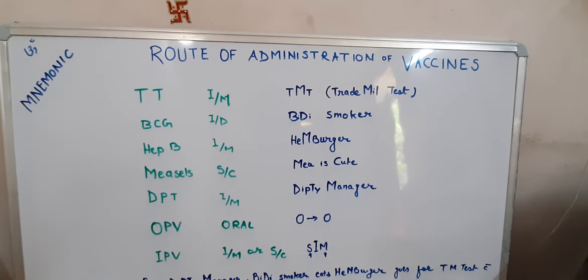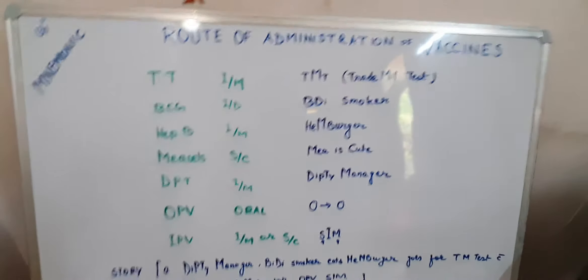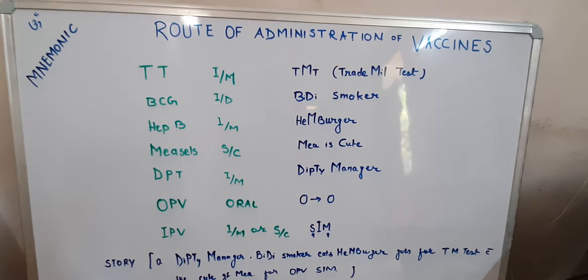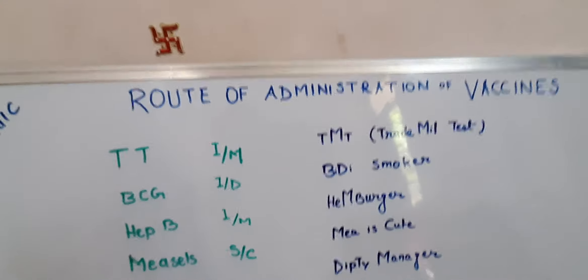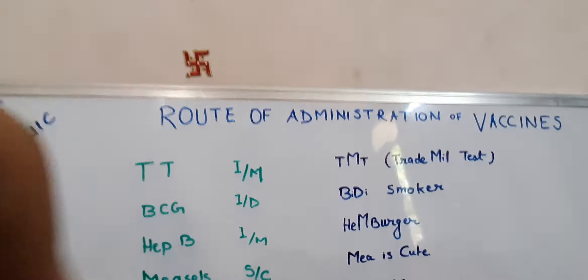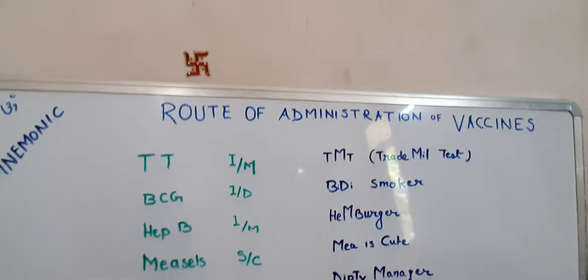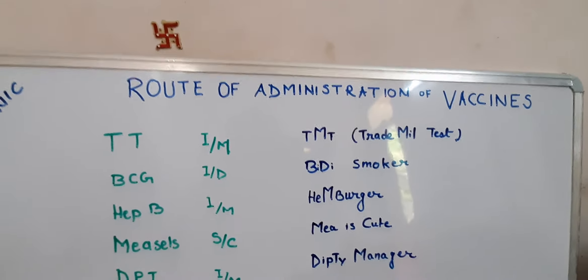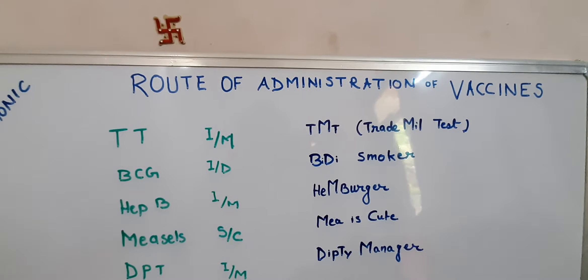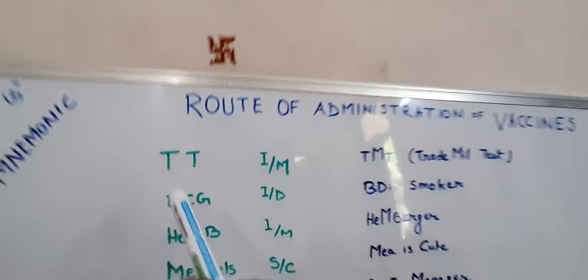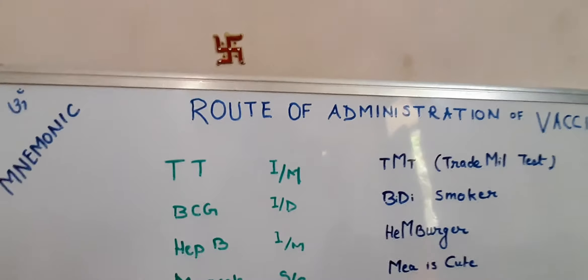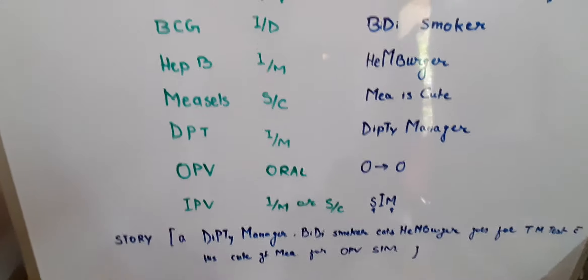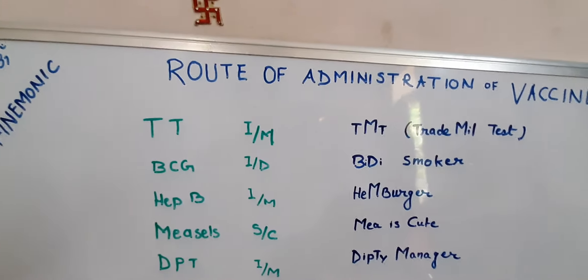Hello friends, today we have an important topic: vaccines and their route of administration. I will be explaining this with some easy mnemonics and a story so that you can remember them at once. Here I have written down the vaccines, the routes, and the mnemonics, and we are going to learn this in the form of a chart.